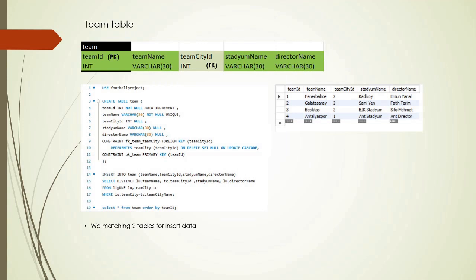We use a foreign key to relate the team table with the team city table. ON DELETE SET NULL is applied — if any team city data is deleted, it will set null in the team table. ON UPDATE CASCADE is also used, so if any information is updated in the city table, it is also updated in the team table. Because of this relation, we use two tables to get data in the INSERT INTO query.